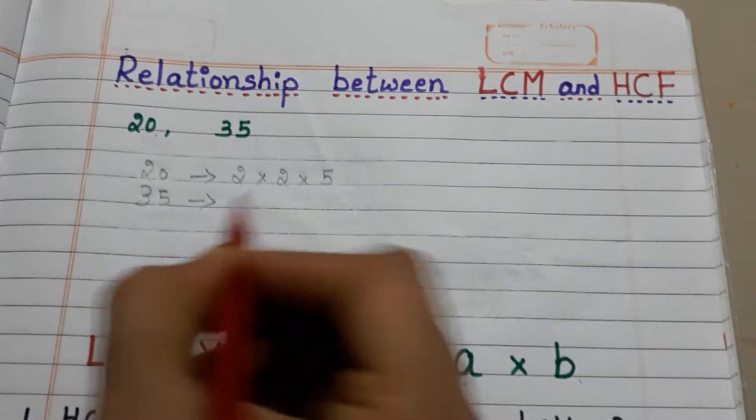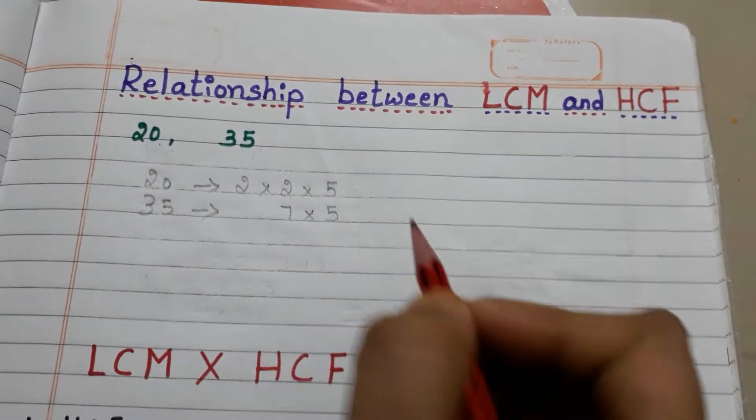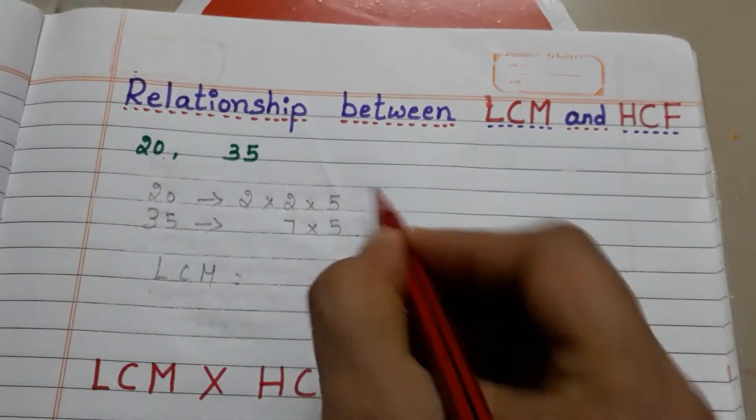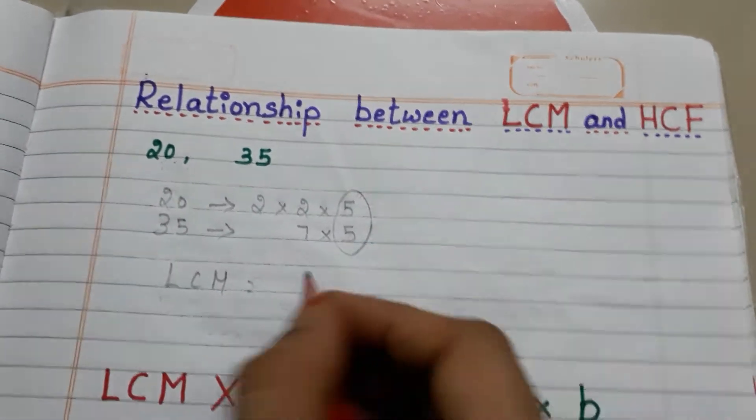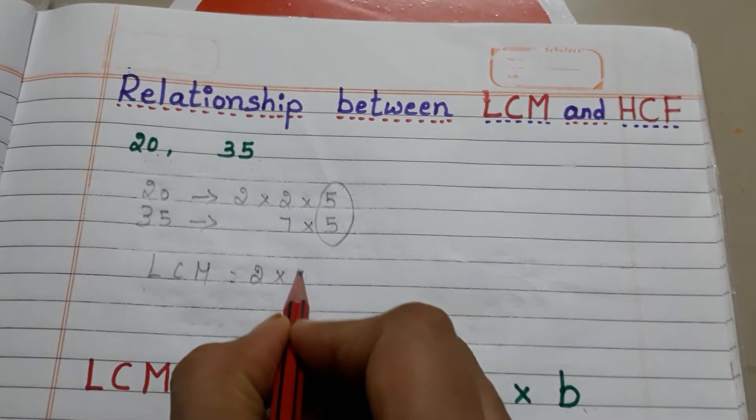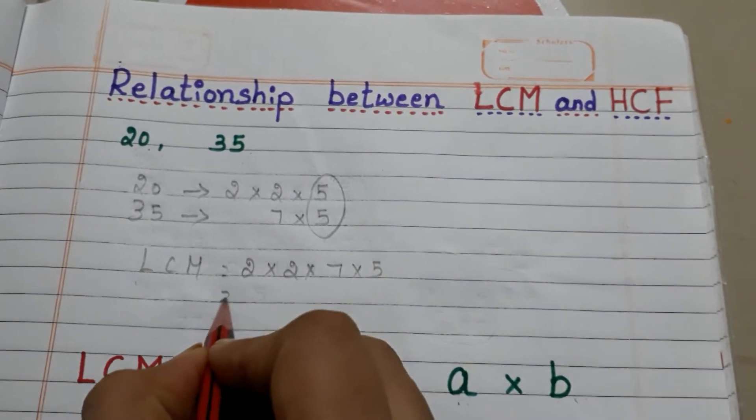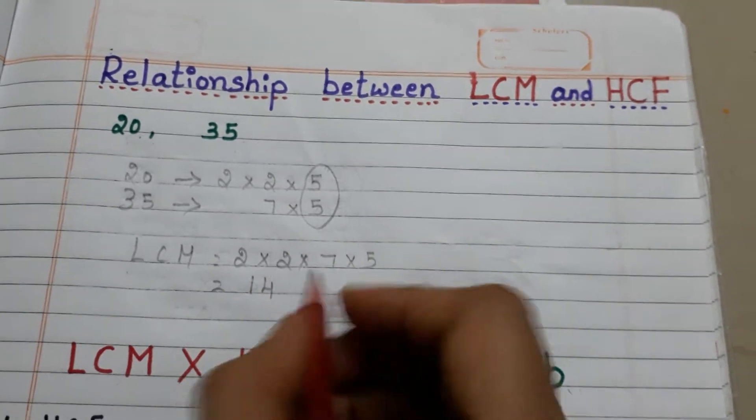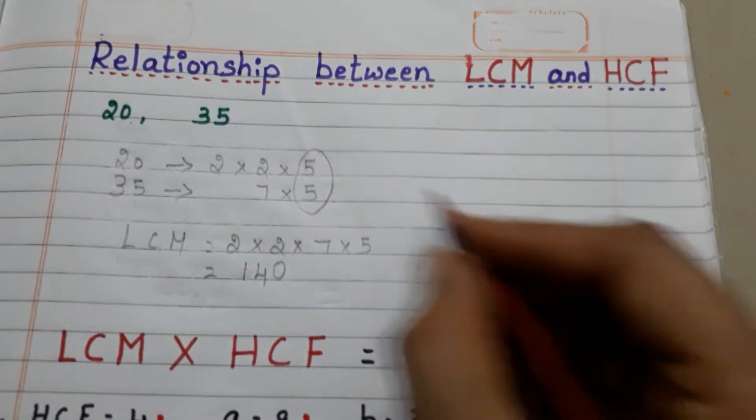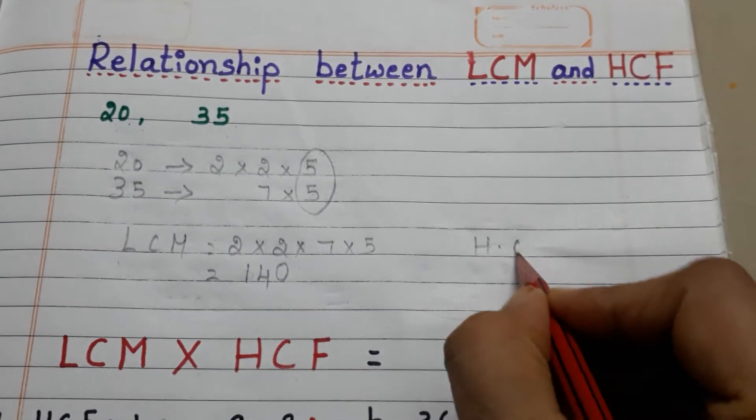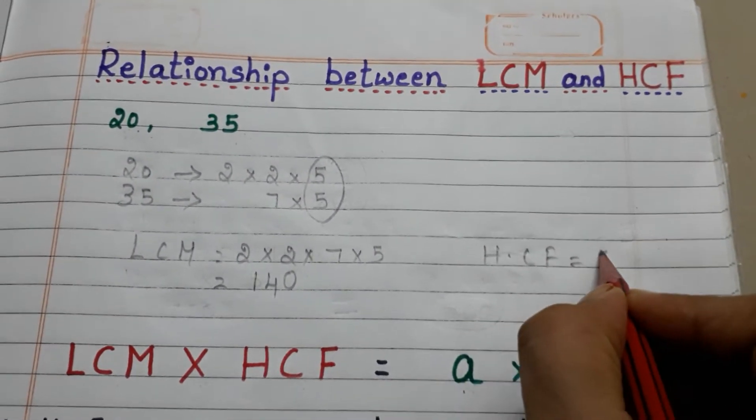Now let us find LCM. See, 5 is the common factor. LCM equals 2 into 2 into 7 into 5. So LCM is 140. What is the HCF here? 5 is the only common factor. So HCF equals 5.